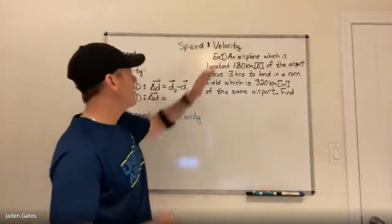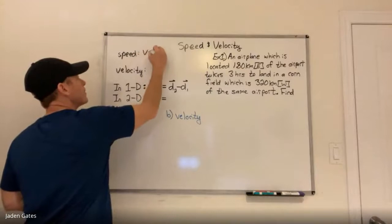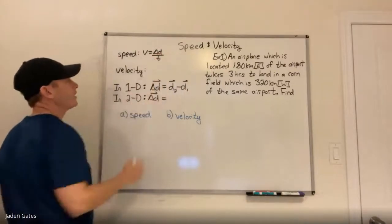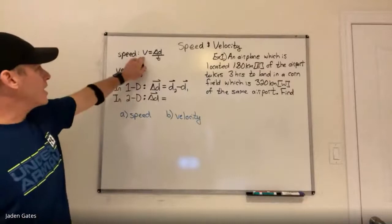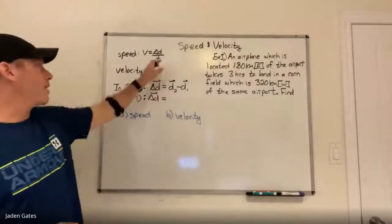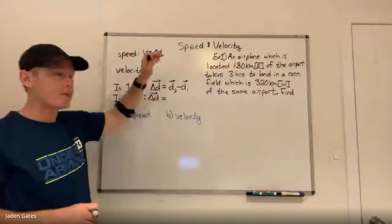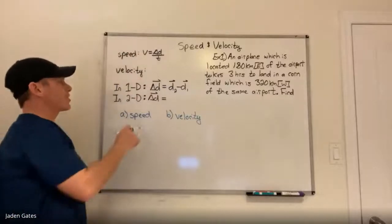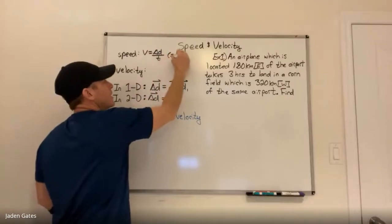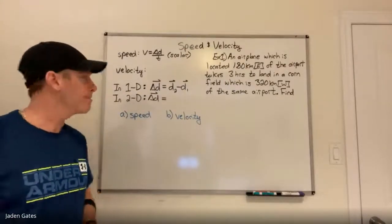When we get to speed and velocity, the formula for speed is V equals delta D divided by delta T. That means speed is equal to delta D — no arrow means distance — divided by our time. Because delta D is distance, which is a scalar, and time definitely doesn't have a direction, speed is a scalar. That means it only has magnitude — size — with no direction.